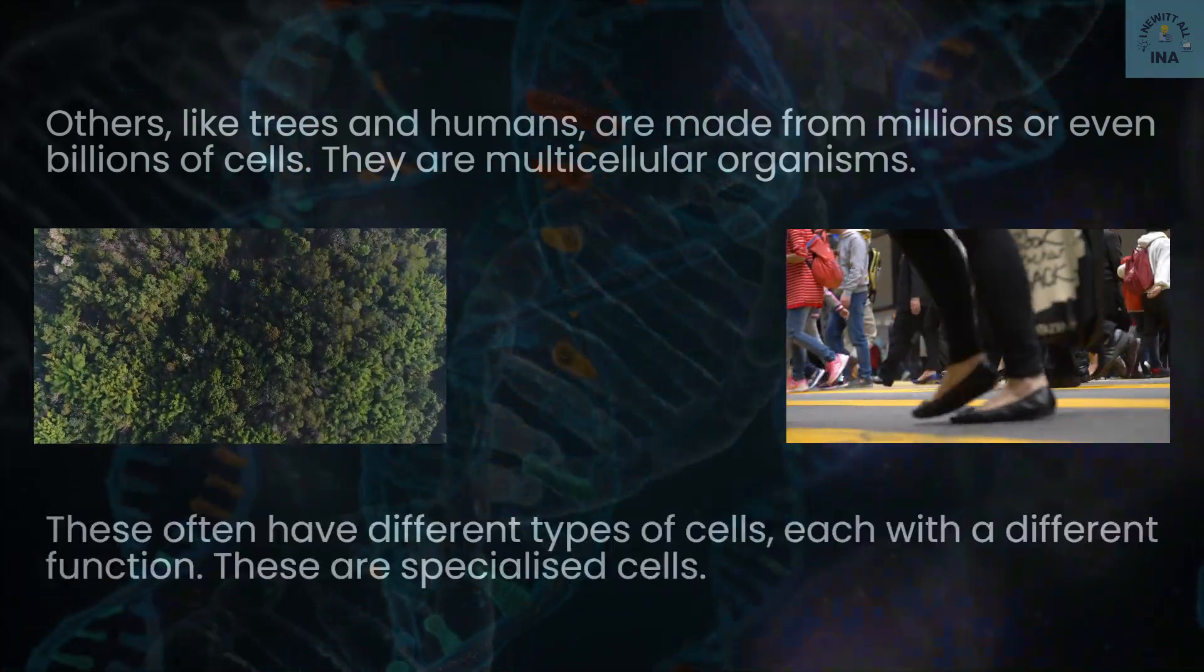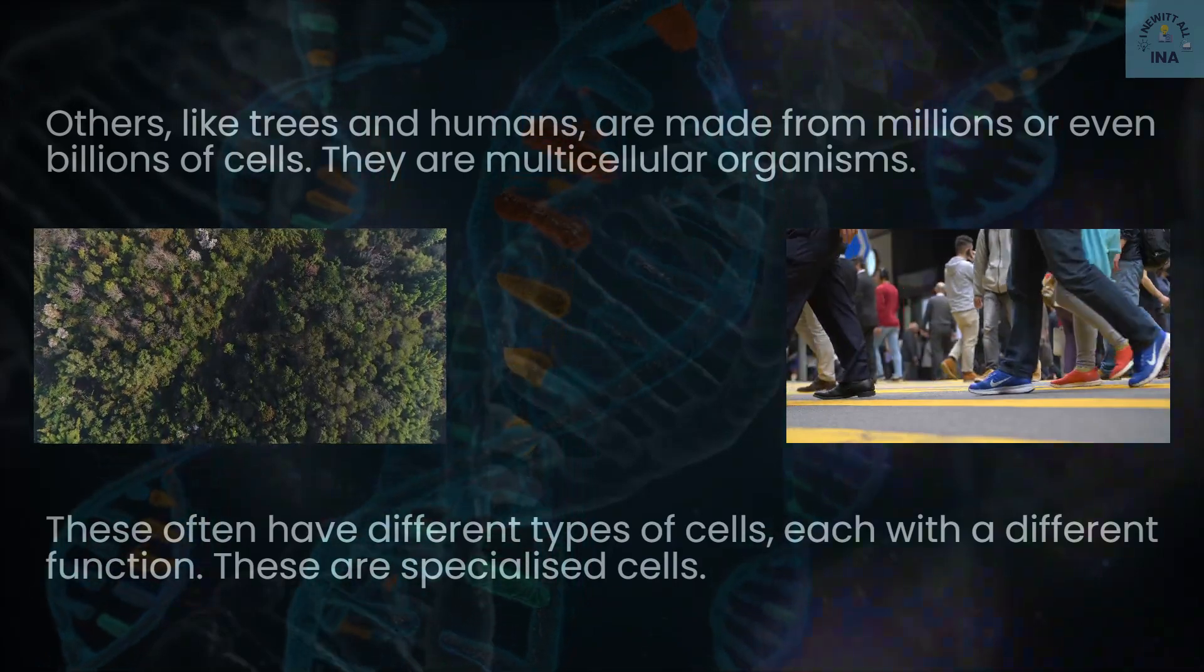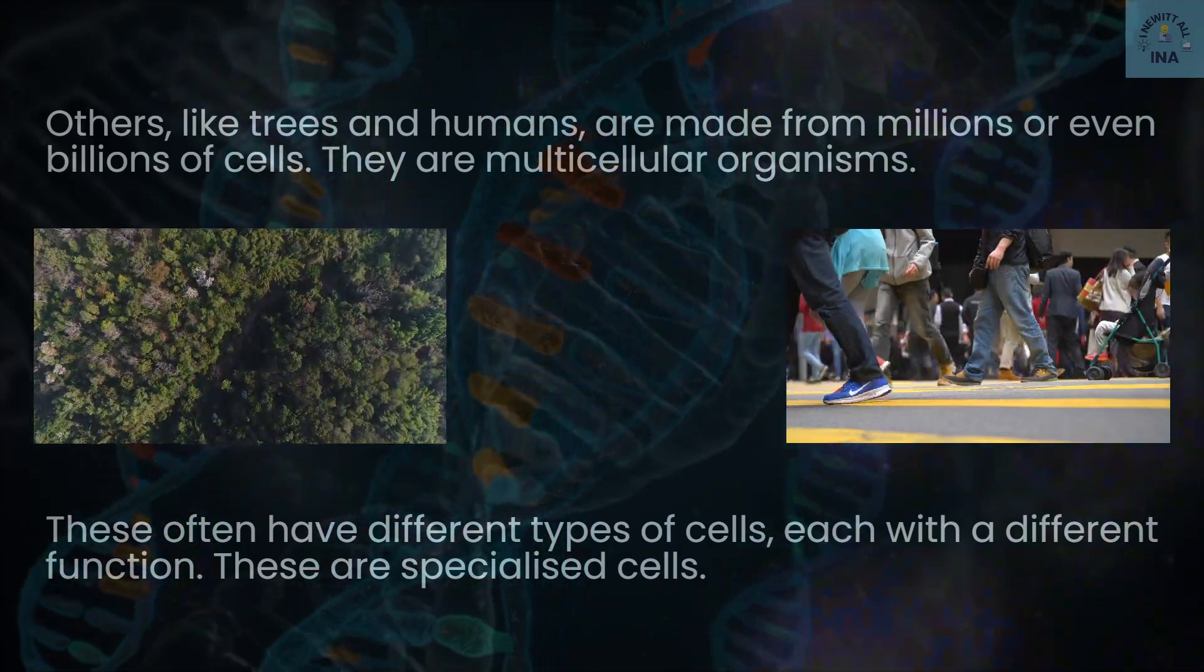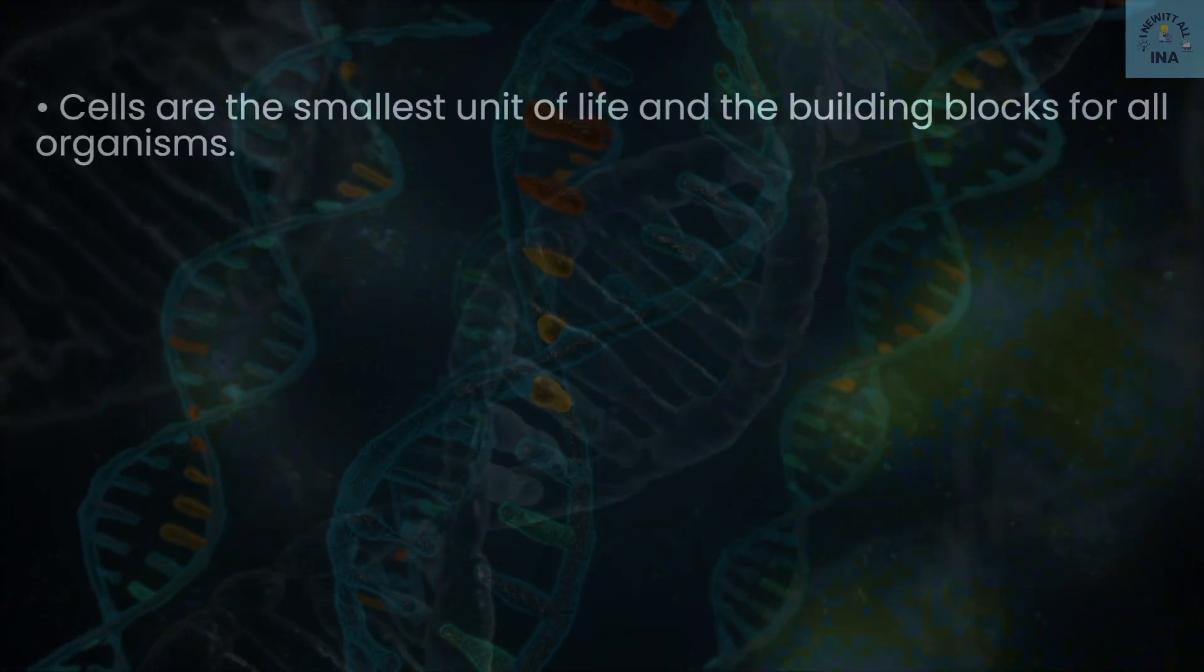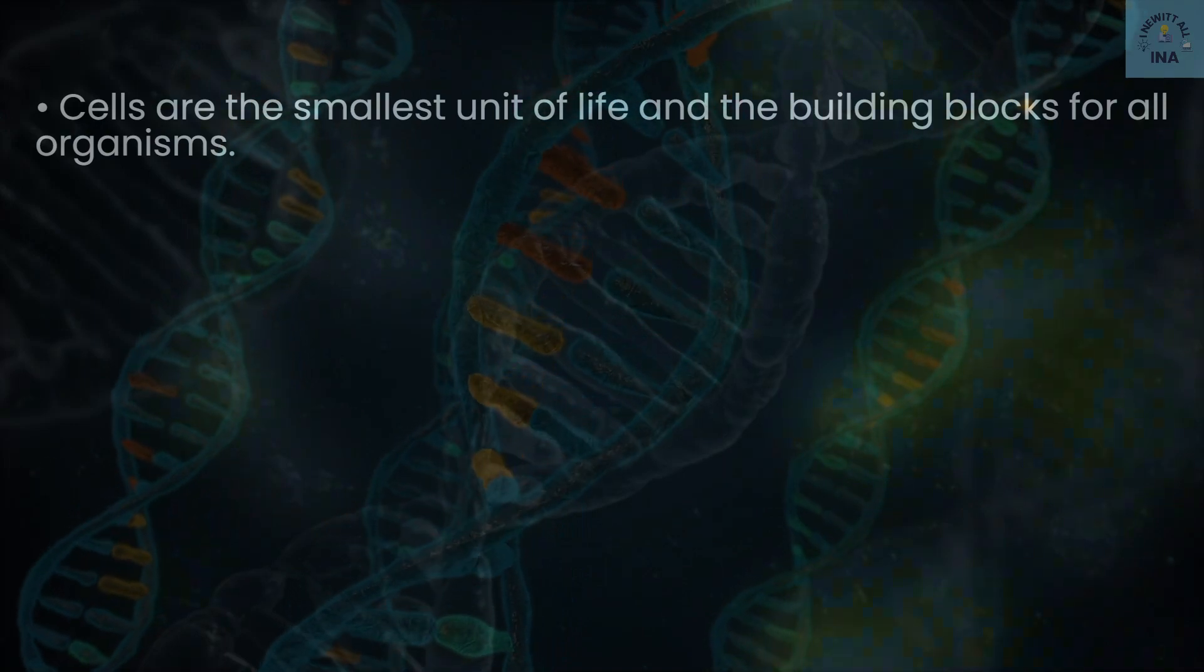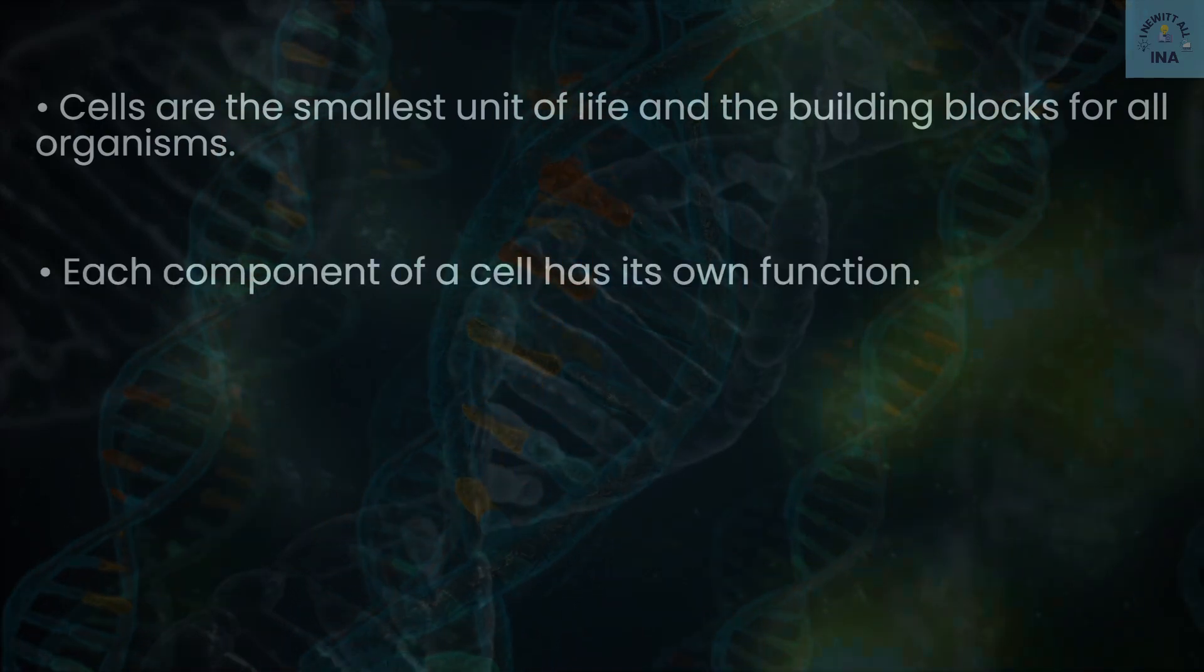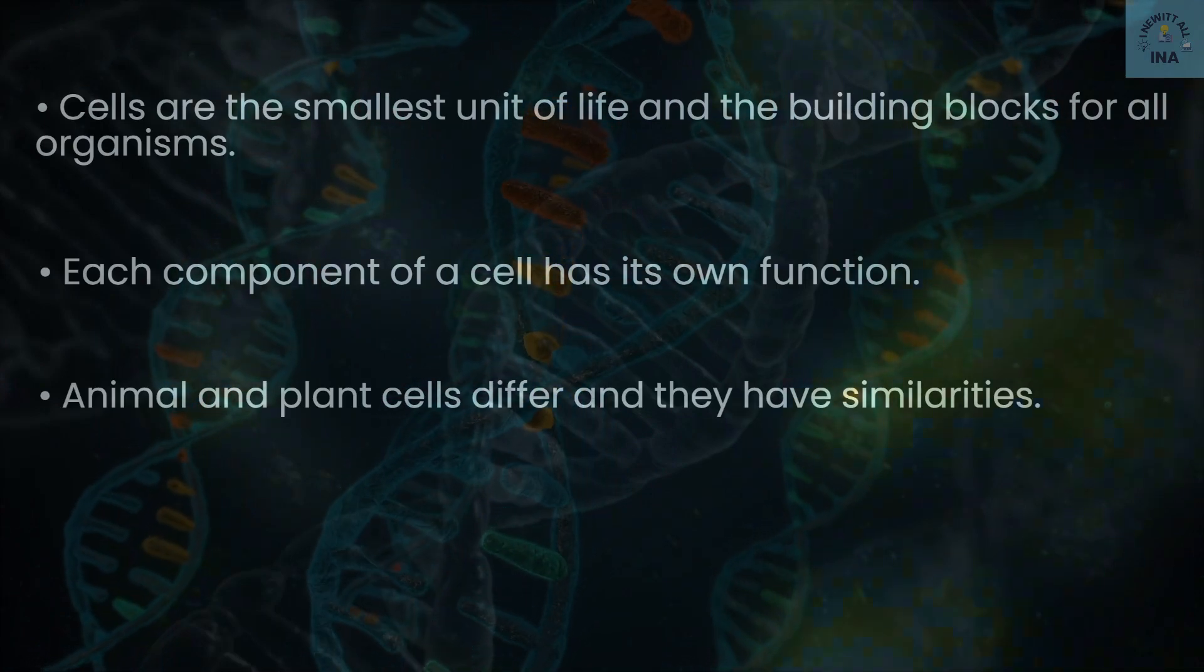These often have different types of cells, each with a different function. These are specialized cells. Key points to remember: cells are the smallest unit of life and the building blocks for all organisms. Each component of a cell has its own function. Animal and plant cells differ and they have similarities.